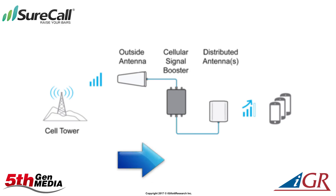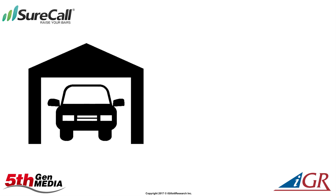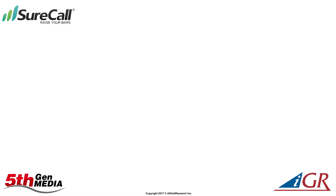Signal boosters, or RF repeaters, are another form of DAS that extend signals in a building or area but do not add capacity. These solutions are ideal for places where coverage is required, such as a parking garage or a warehouse.